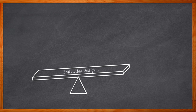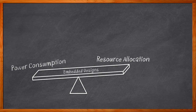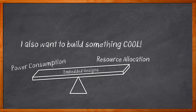Doesn't it seem like all embedded designs are some kind of balancing act? This is especially true when it comes to power consumption and resource allocation. You want analog in your design or the newest and coolest sensors, but do you have the power budget for all of that and keep it within a reasonable amount of board space? The balancing act of today's embedded designs can be tricky. But you can lower your power consumption, have real analog, and keep your board real estate in check with the help of Microchip's PIC and AVR microcontrollers. Let's get into it.